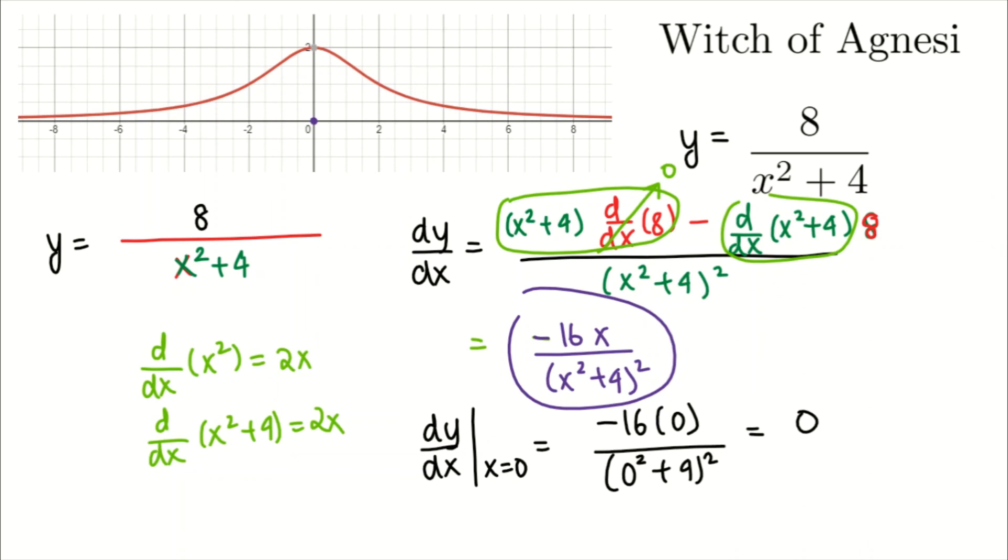This here is a horizontal tangent. The slope here is equal to 0. And so that just checks it for one point.